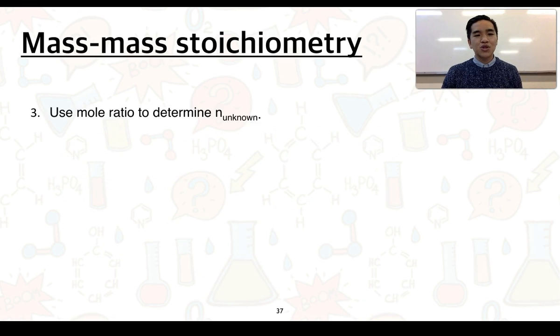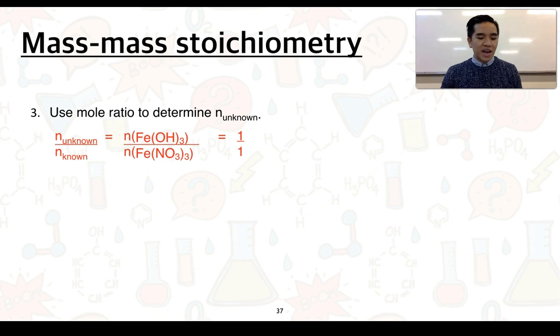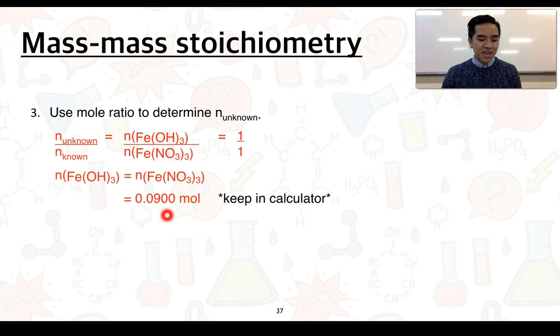Step three is then to use the mole ratios to determine the number of moles of our unknown. So, looking at our balanced chemical equation, what we see is that the mole ratio of iron-3 hydroxide to iron-3 nitrate is 1 to 1. We can then rearrange and find that the number of moles is equivalent.